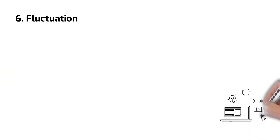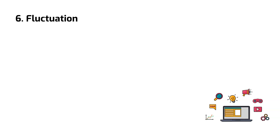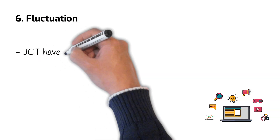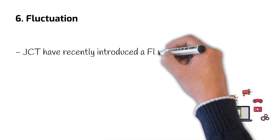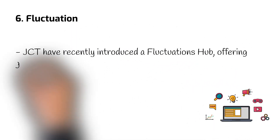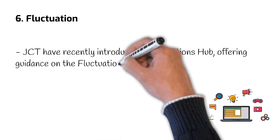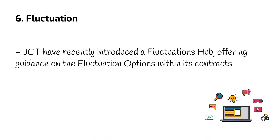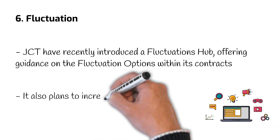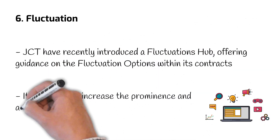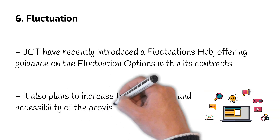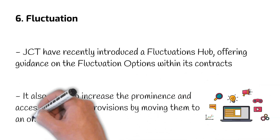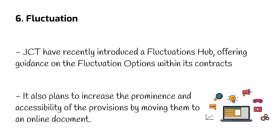Number 6: Fluctuation. Price uncertainty has been one of the key issues facing the construction sector in recent years. JCT has recently introduced a fluctuations hub, offering guidance on fluctuation options within its contracts. It also plans to increase the prominence and accessibility of the provisions by moving them to an online document.